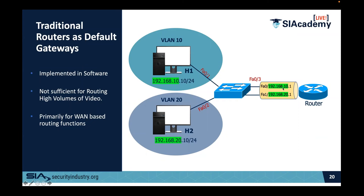That router interface becomes the default gateway for hosts in each VLAN. Under VLAN 20, 192.168.20.1 becomes the default gateway for that network. A router is a software-based entity with interfaces belonging to each VLAN. When communication needs to happen between VLAN 10 and VLAN 20, traffic must pass through the default gateway. So when 192.168.10.10 cannot find 192.168.20.10 locally, it forwards the packet to its default gateway at 10.1, and the router bridges the traffic out to VLAN 20 to reach its recipient.